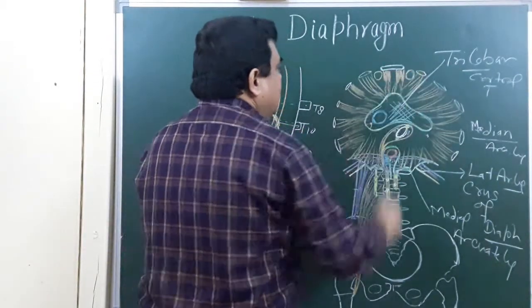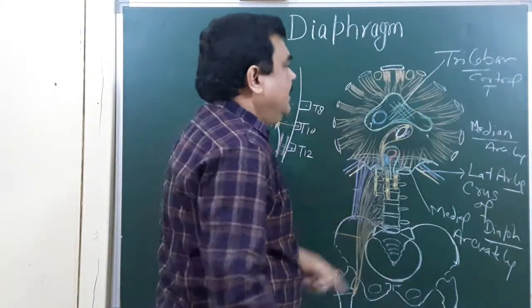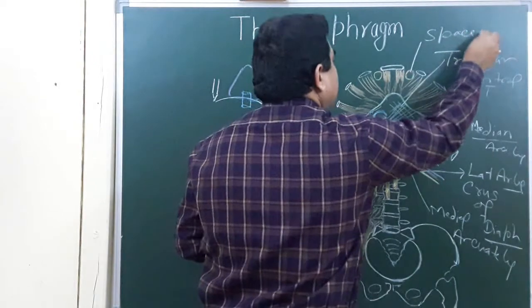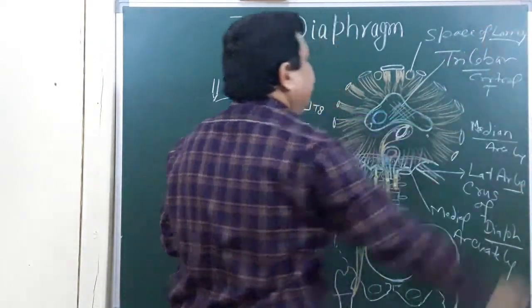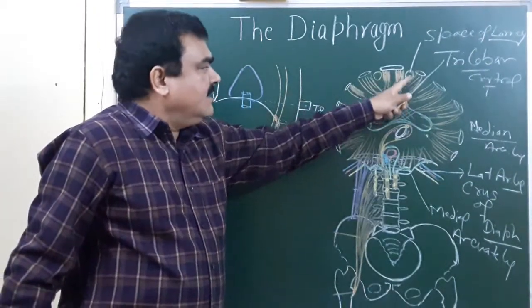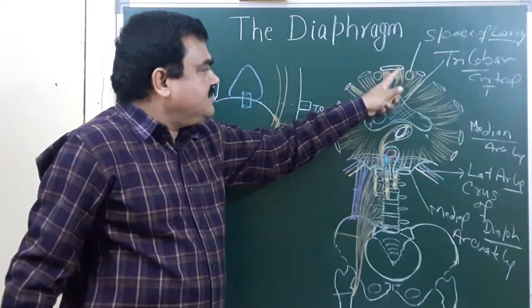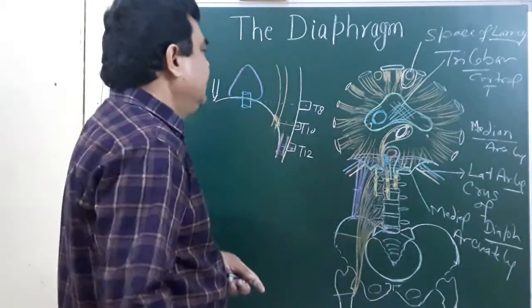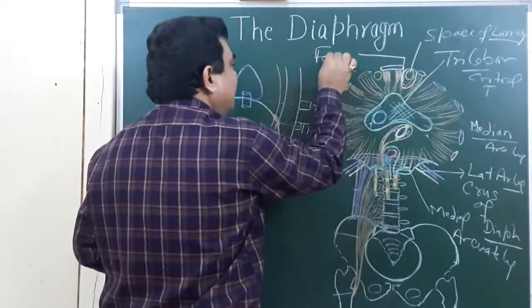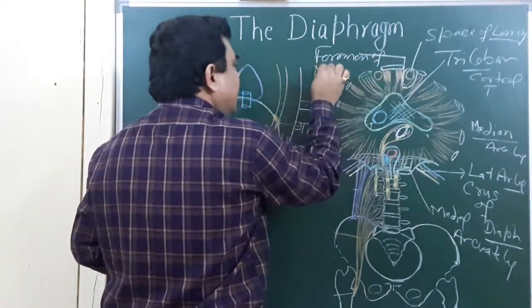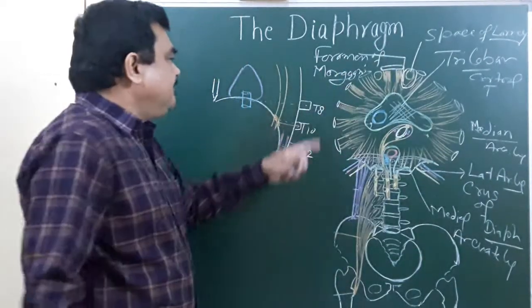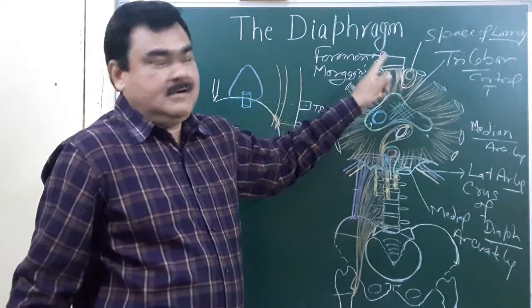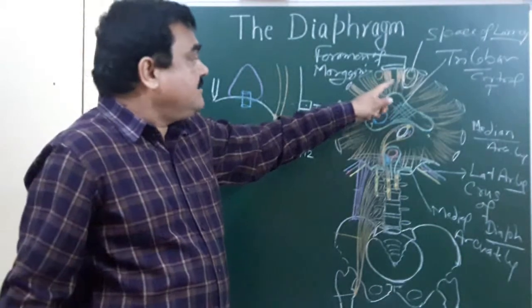This space between the sternum and the seventh costal cartilage is known as the space of Larrey. Sometimes, due to defective development of the muscles arising from the sternum and seventh costal cartilage, this gap is enlarged — this is known as the foramen of Morgagni. If this foramen of Morgagni is present, then a retrosternal diaphragmatic hernia takes place through this space.